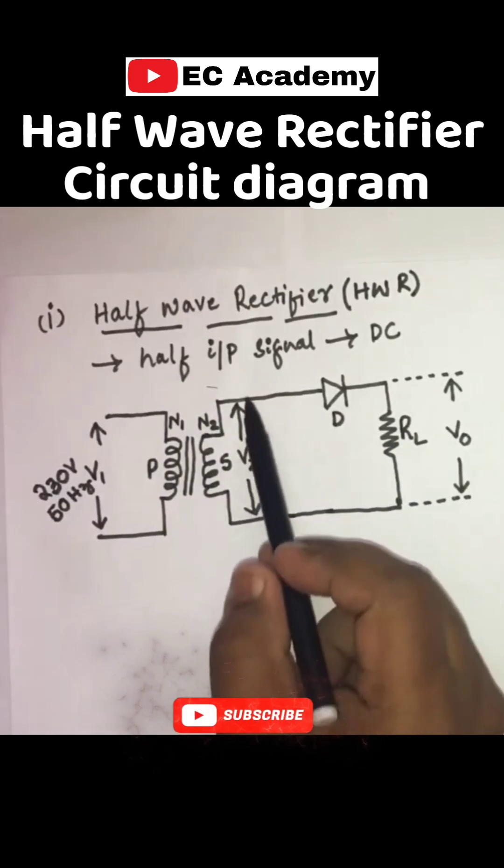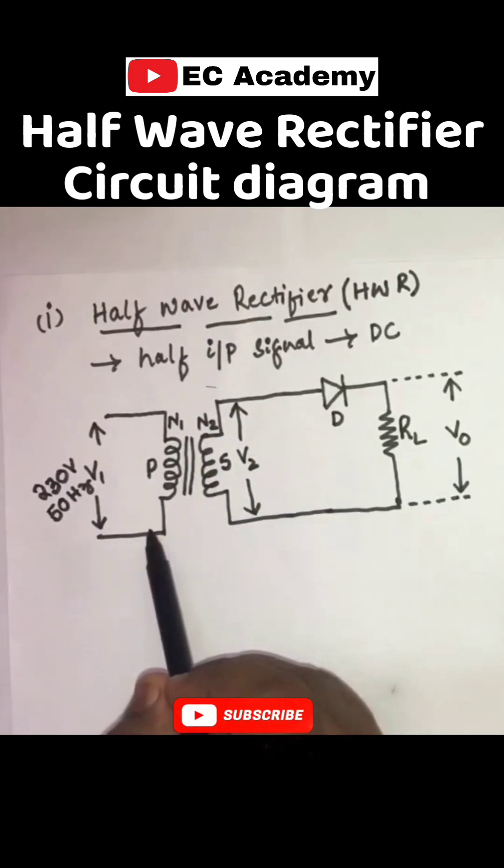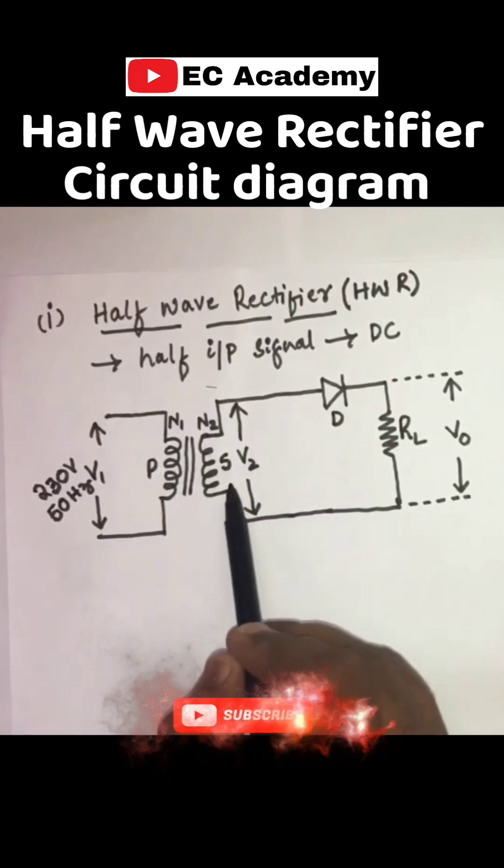If you observe the transformer, it is having two sections. We will call the section towards left hand side as a primary section and the section towards the right hand side we will call that as a secondary section.